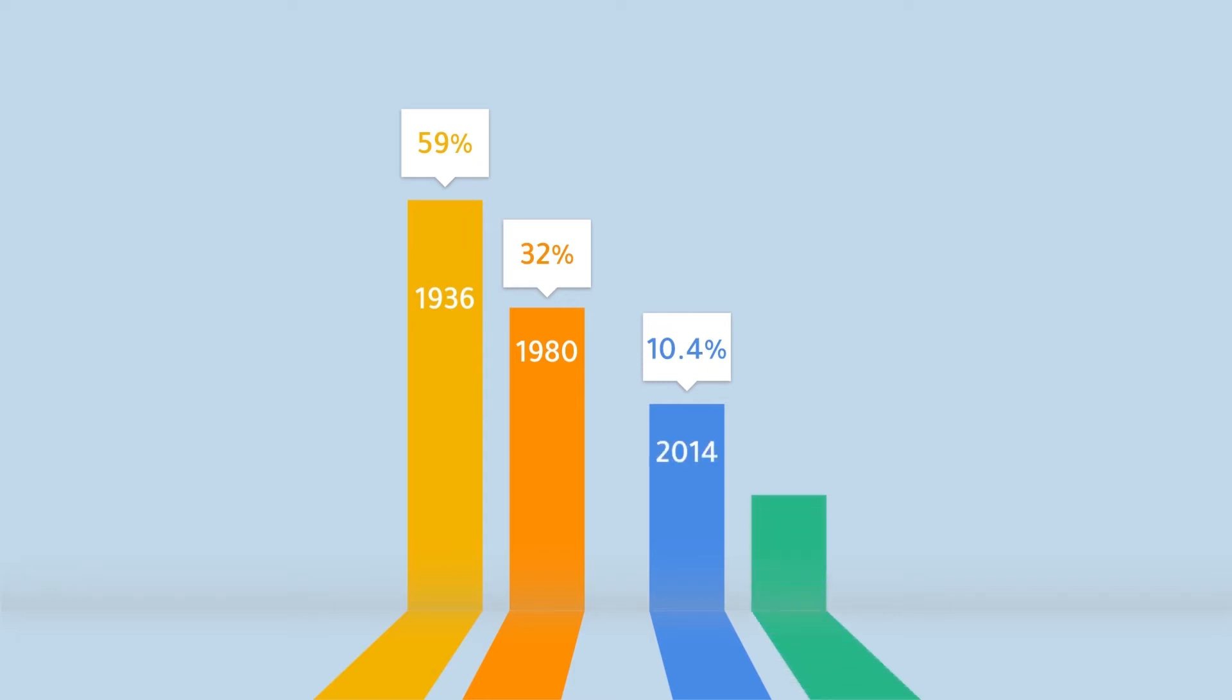The labor force of youth workers in the Palestinian agricultural sector has declined from 59% before 1936 to around 32% in the 1980s to 10.4% in 2014 and about 6.2% in 2018.